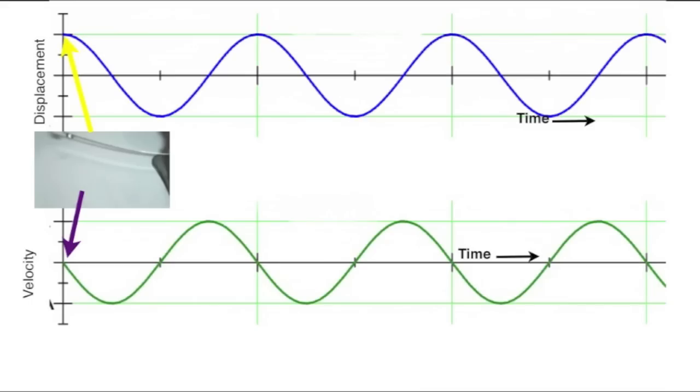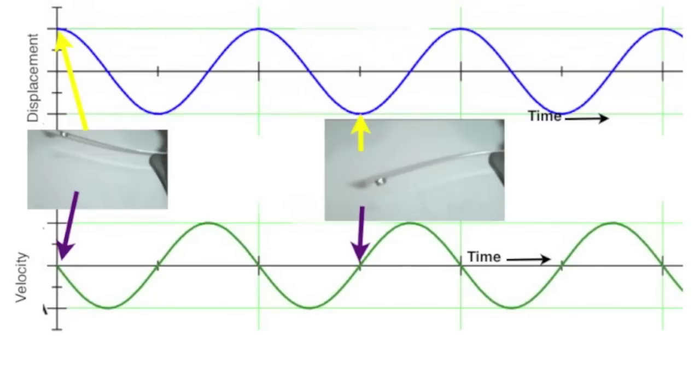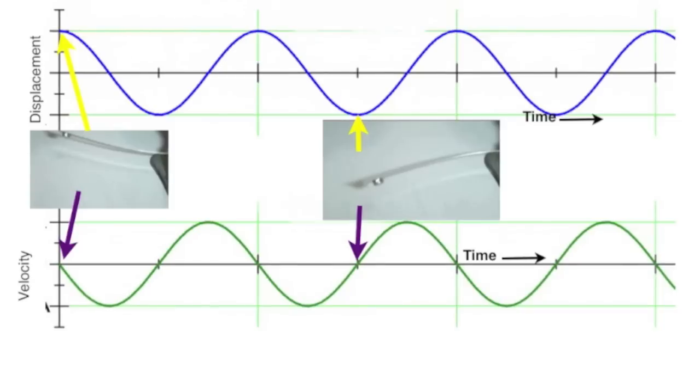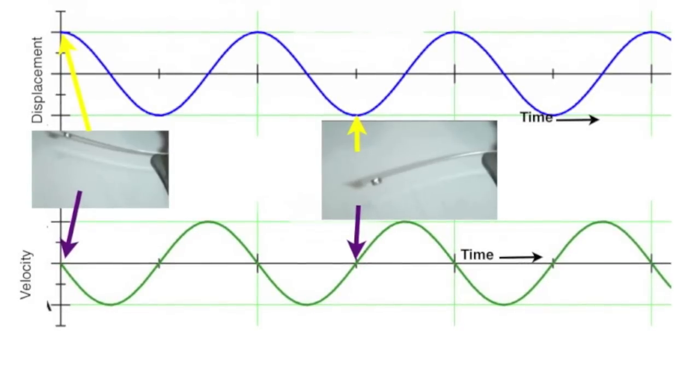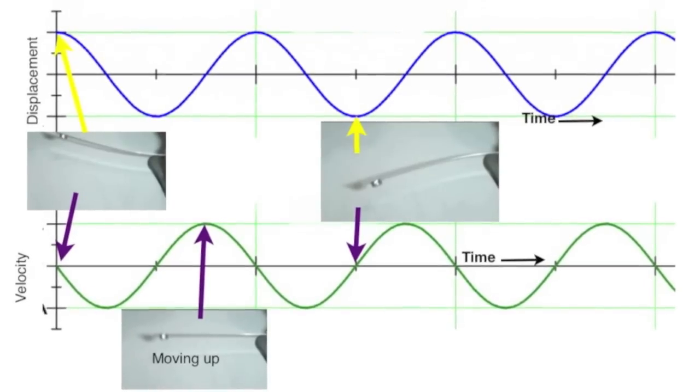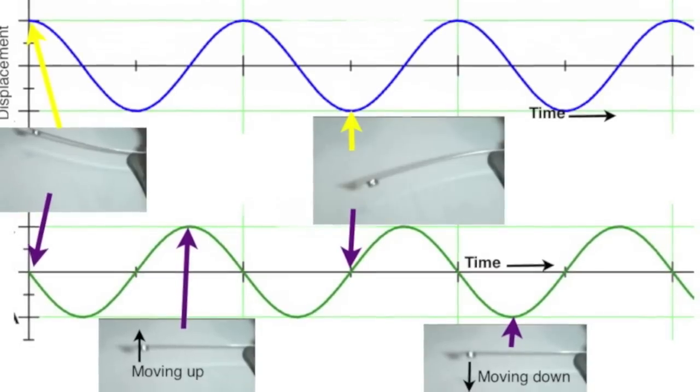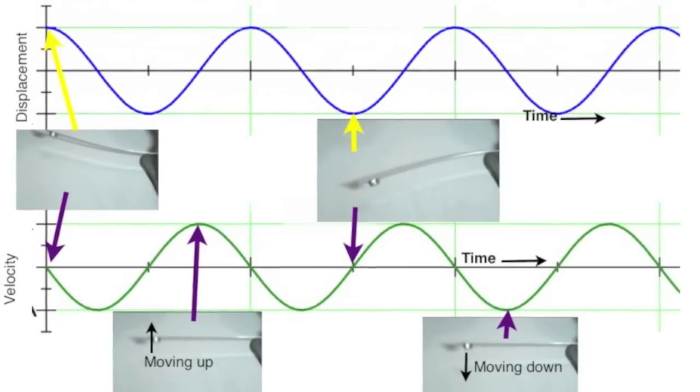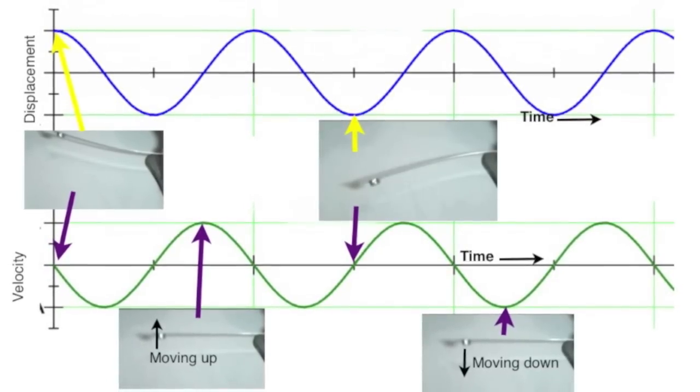Moving on from displacement to velocity. When the displacement is maximum and at the top, the velocity is instantaneously zero. The speed is increasing with the mass traveling down, so the velocity is increasingly negative. When the displacement is at its extreme position at the bottom, again the velocity is zero, but is about to move up, and therefore the velocity increases in the few moments after that. At the center of oscillation, the mass will be traveling at its maximum velocity, either down or up. You can see that the resulting velocity graph is a quarter of a wave out of phase with the displacement.